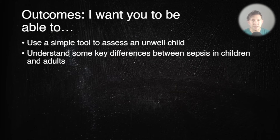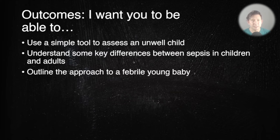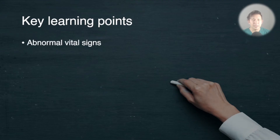What I want you to be able to do by the end of watching these videos is: number one, have a simple tool to assess an unwell child; number two, understand some of the key differences between adults and children when we talk about severe infections and sepsis; and number three, outline your approach to an unwell febrile young baby, or even just a febrile young baby who doesn't look that unwell. The key points are really to take a lot of notice of abnormal vital signs, because sepsis can be really subtle in children.